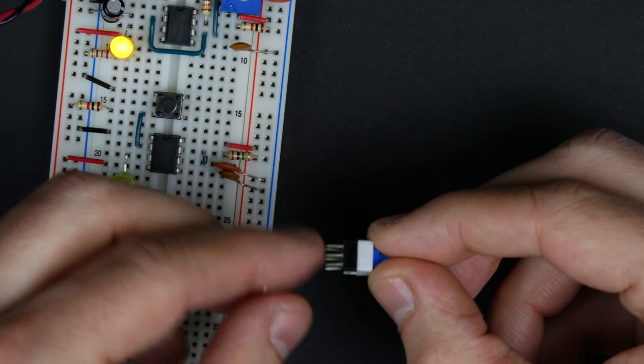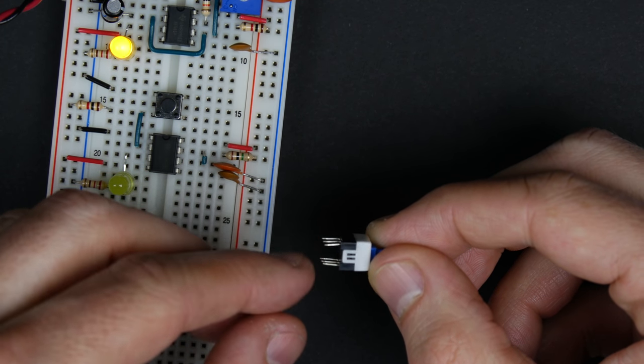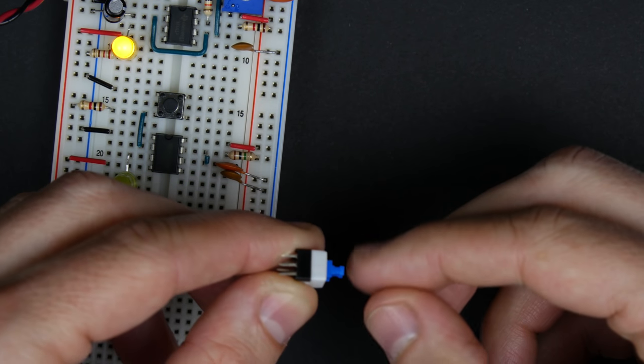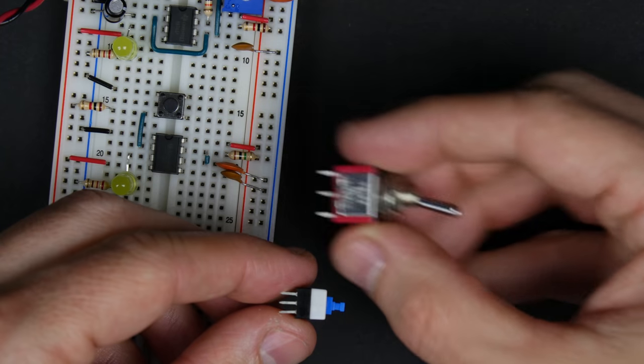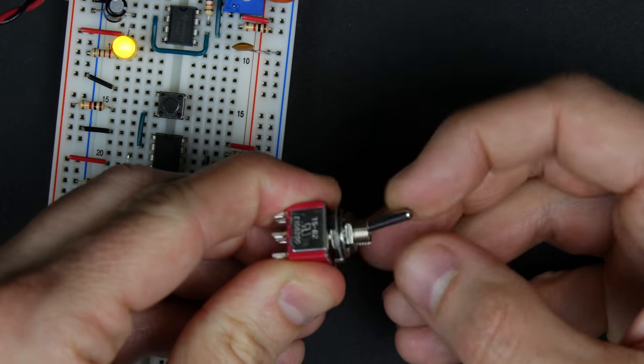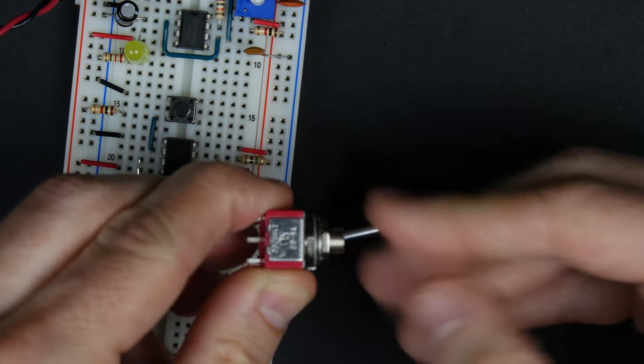And there's two, so that's double throw, it's called, and then it's double pole as well. There's sort of two sets that are independent. They're just connected to the same button. So double pole, double throw, and it's a fairly common type of switch. This is another switch here that's the same thing, and you've got the two sets of three connections there.